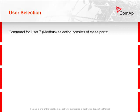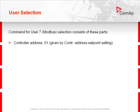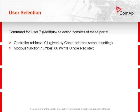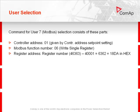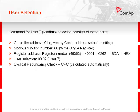The command for user 7 Modbus selection consists of these parts: control address, Modbus function number, register address, user selection, and cyclical redundancy check — done automatically by your Modbus terminal. The complete request is shown here.